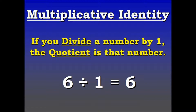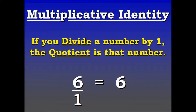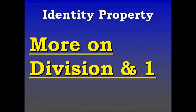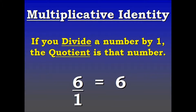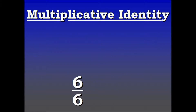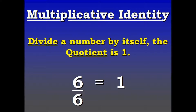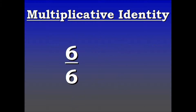One more point to make: you can also see division as a forward slash, or as a ratio or a fraction. If you divide a number by itself, the quotient is 1. So if you have 6 over 6, we understand that equals 1.